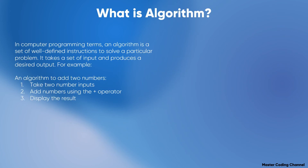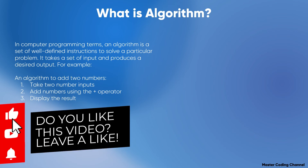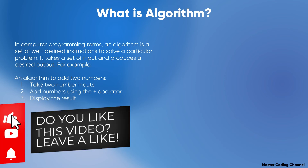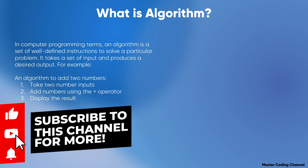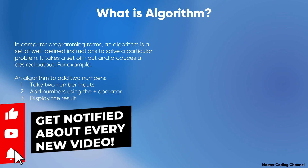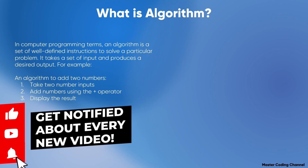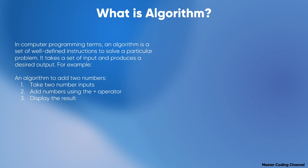What is an algorithm? This is a short introduction and we are going to go through it step by step in the next course lessons, so don't worry — we are going to clarify everything. In computer programming terms, an algorithm is a set of well-defined instructions to solve a particular problem. It takes a set of inputs and produces a desired output.